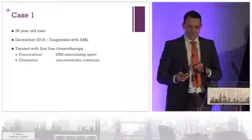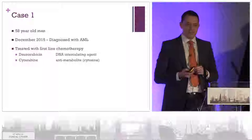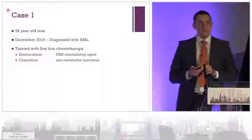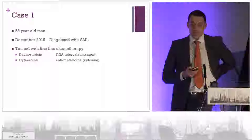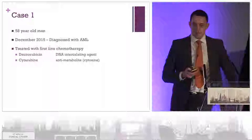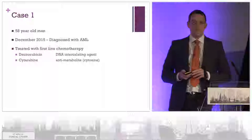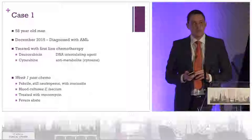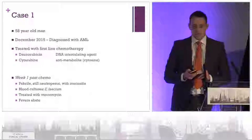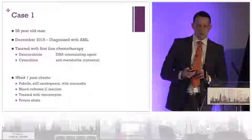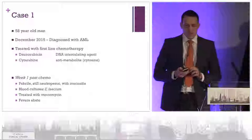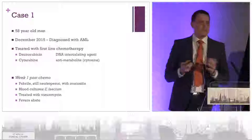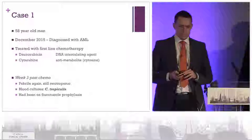Moving on to the first case: a 58-year-old man seen at BATS Health in December of 2015, diagnosed with AML. He's treated with standard first-line chemotherapy, and slightly unsurprisingly, one week into his treatment he's febrile, neutropenic with nasty mucositis, and has an Enterococcus faecium in his blood cultures. He's treated with vancomycin and the fevers abate — not that exciting.